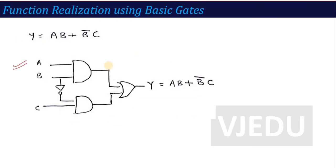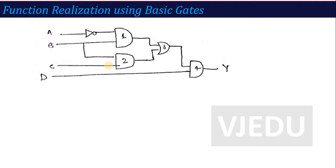Another example to make the concept clearer. In this next example, a circuit is given. When the circuit is given, how do I calculate its output expression? We work in reverse operation — we calculate the output expression y for the given circuit.